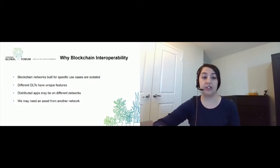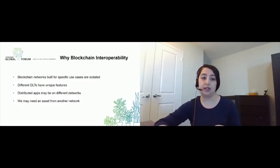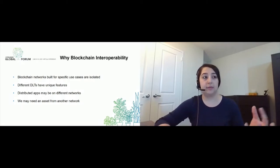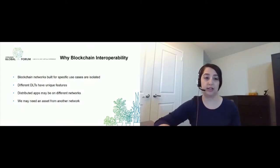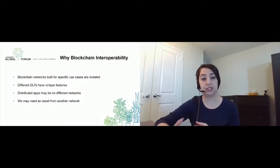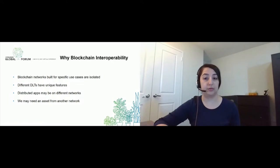Other than that, different distributed ledger technologies have unique features. I should clarify here that when I talk about distributed ledger technologies, I'm talking about the underlying technology. For example, Hyperledger Fabric is a DLT and Hyperledger Indy is another one. But when we implement a network based on each of these technologies, I'm going to refer to that as the blockchain network and not the blockchain technology. So when I say different distributed ledger technologies have unique features, I mean, for example, Hyperledger Indy is designed for digital identities specifically.